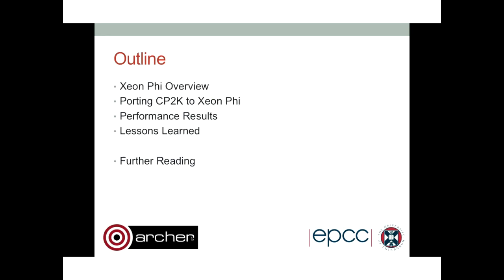Here's an outline of where I'll be going this afternoon. I'm going to spend a little bit of time talking about what the Xeon Phi is and its architecture, then the process we went through with application porting using CP2K as an example, but also trying to draw some broader conclusions and give some pointers for things you might want to look out for if you're thinking of porting applications yourself. I'll briefly talk about performance results, summarize the broader lessons learned, and finally give some pointers to where you can find more information.